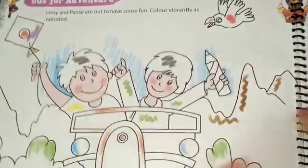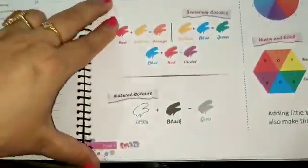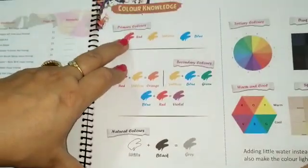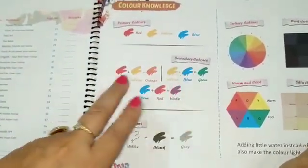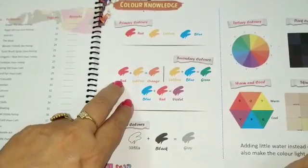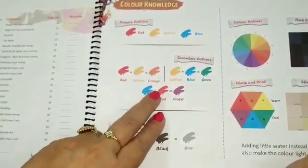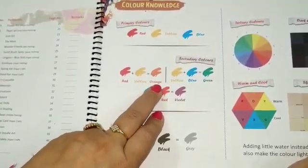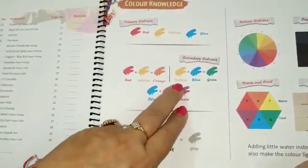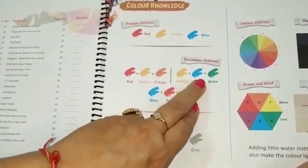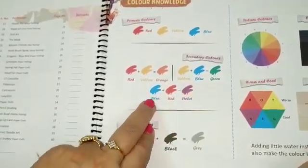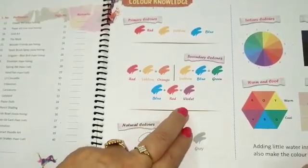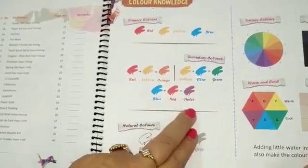Class 3, now we will have primary and secondary colors. You all know what primary colors are: red, yellow, and blue. Secondary colors: when we mix yellow and red we get orange, when we mix yellow and blue we get green, when we mix blue and red we get violet.